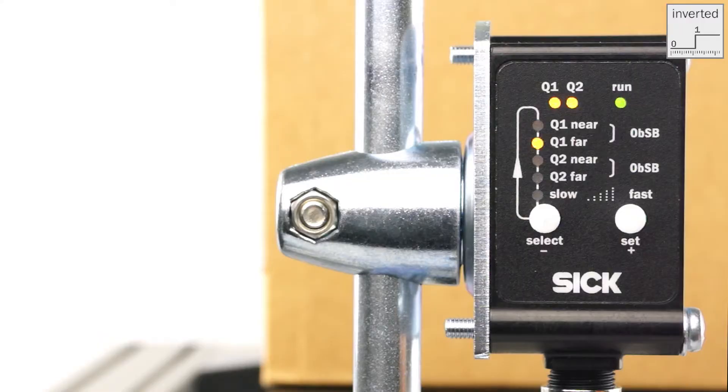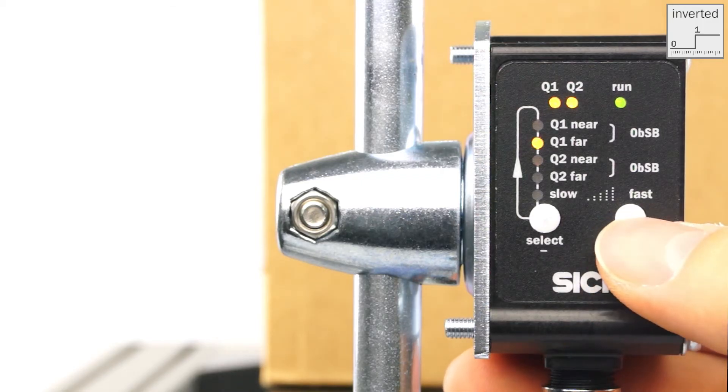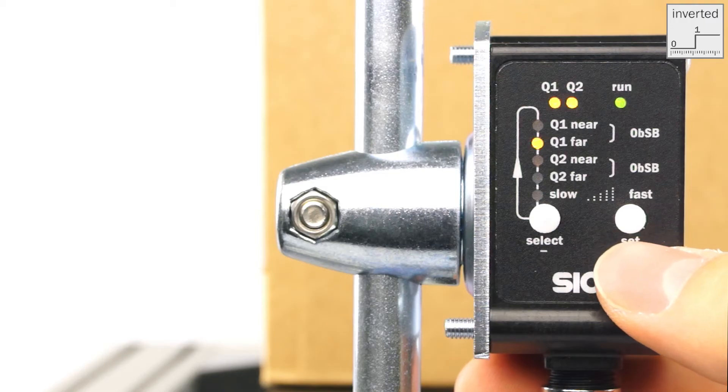With a press on the set button, you teach in the available distance. The taught in point is now signaled by the two LEDs Q1 and Q2 when they briefly flash twice.